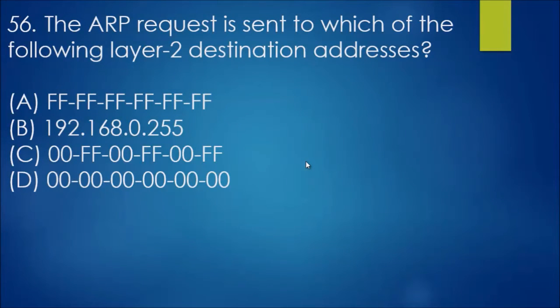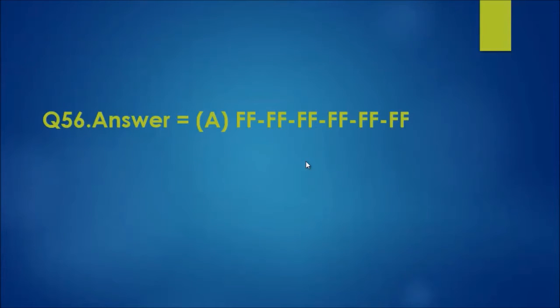Question 56: The ARP request is sent to which of the following layer 2 destination addresses? Layer 2 means switch, so if we look at B, it is a layer 3 IP address dealing with routers. The other three are MAC addresses which deal on the switch. As the ARP is a broadcast message, that means A is the answer, the all F's which represents a broadcast message.